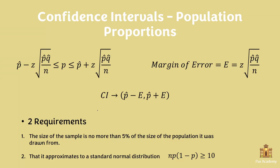Today, let's talk about confidence intervals with population proportions. Here are the formulas that we're going to need. We have the confidence interval formula — the whole one. As you can see, we have the true proportion in the middle, and then on the left-hand side we have an estimate, and on the right-hand side we have another estimate.